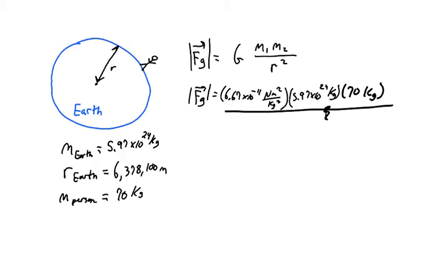Divided by the radius of the earth, which is 6,378,100 meters, and that gets squared. And when I punch that into my calculator, I get a gravitational force between the person and the earth of about 685 newtons.